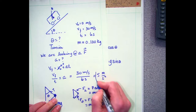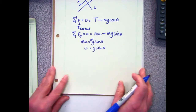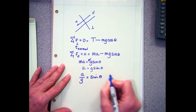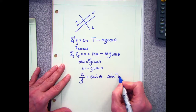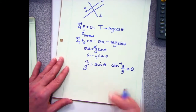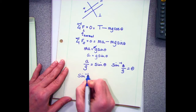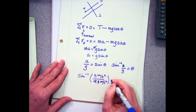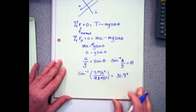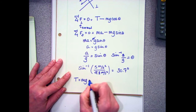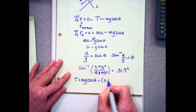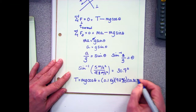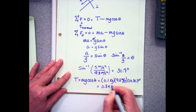We calculated the acceleration, so a divided by g equals sine of the angle. Taking the arc sine: sine⁻¹ of (5 m/s² divided by 9.8 m/s²) gives me 30.7 degrees. Now tension equals mg cosine of the angle: 0.1 kilograms times 9.8 m/s² times cosine of 30.7 degrees gives me 0.843 newtons.